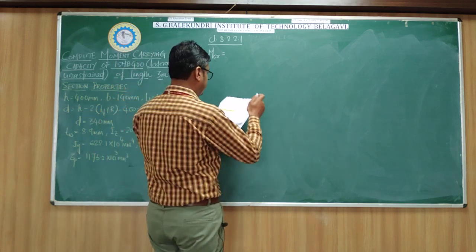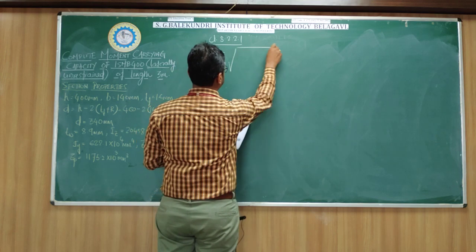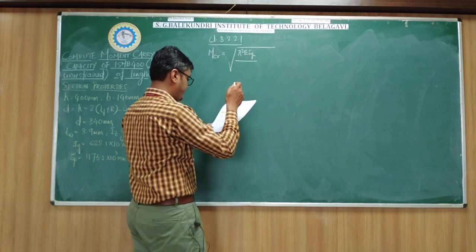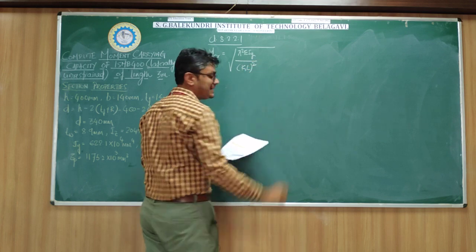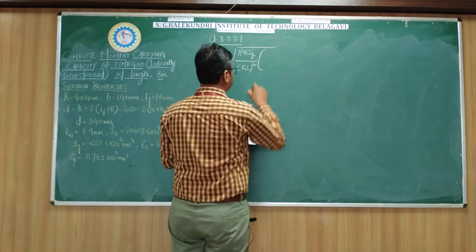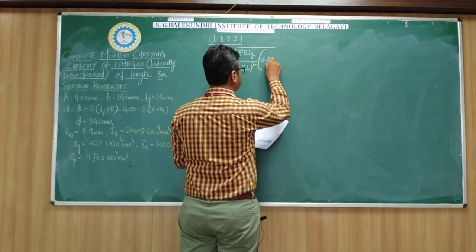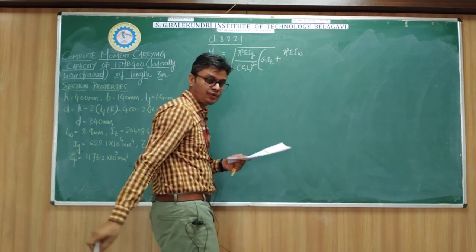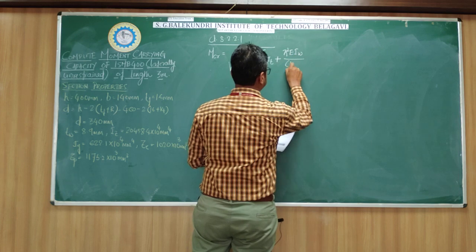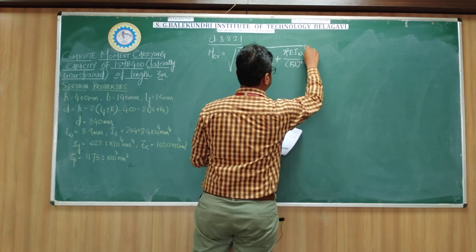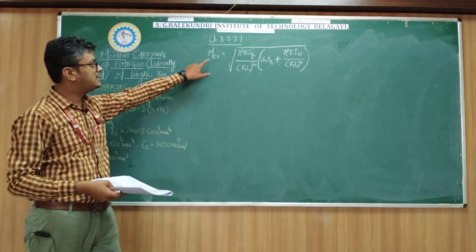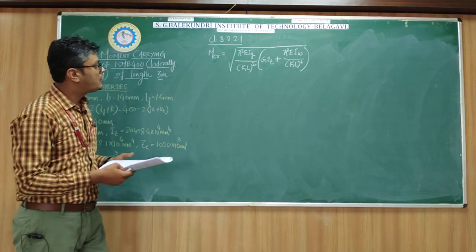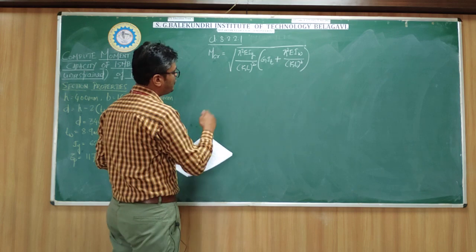As per clause 8.2.2.1, the elastic critical moment is given by this formula: π²EIy/(KL)² multiplied by square root of [GIT + π²EIw/(KL)²]. This is the formula to find the elastic critical moment for our type of beam.